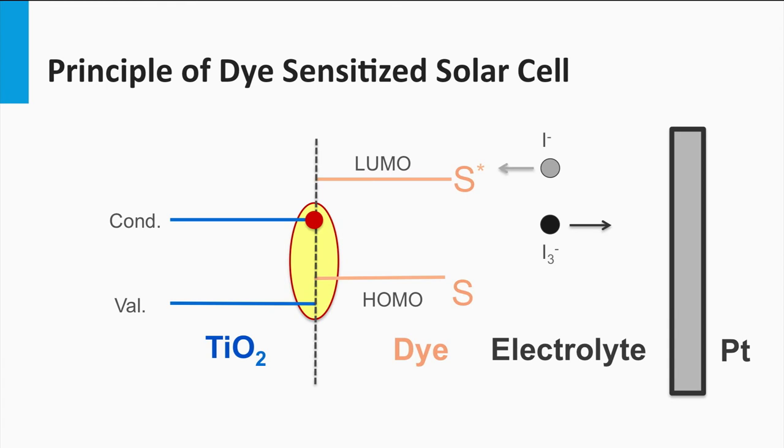The electrons in the titanium oxide move to the TCO-based back contact. The transport mechanism is diffusion-based. The electrons diffuse between the various titanium oxide nanoparticles until they arrive at the TCO contact. Through the electric circuit, the electrons move to the counter-electrode, in other words, the other contact.